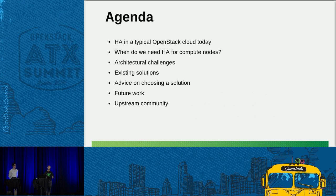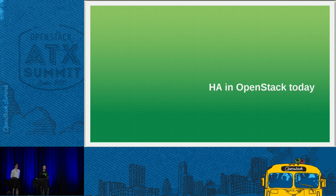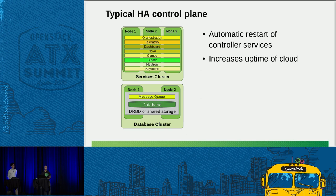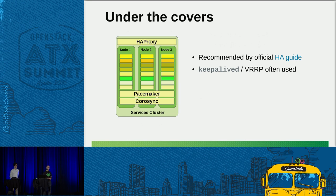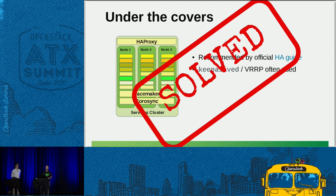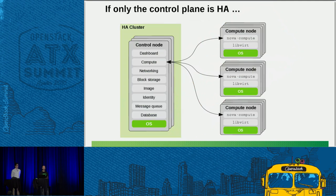Today, high availability in OpenStack usually looks something like this — it's just on the control plane, with active-active services for the OpenStack API services, and active-passive maybe for the database and message queue. The point is that services get automatically restarted and you get increased uptime in terms of manageability of your cloud. If you look a bit closer under the covers, you'll typically see Pacemaker and Corosync used as the underlying clustering technology, HA Proxy for load balancing, and often Keepalived as well. This is all very standard stuff and basically a solved problem, but it's outside the scope of this talk — it just sets the context.